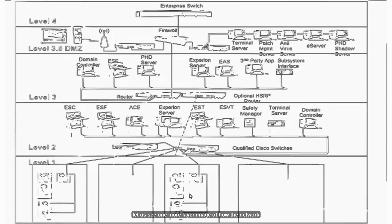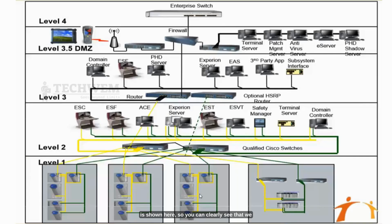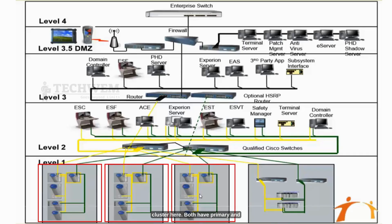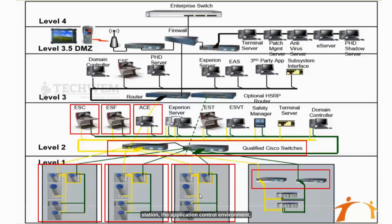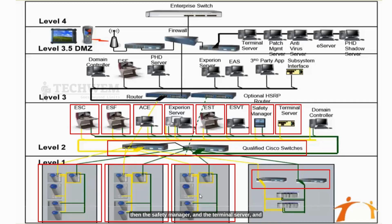Now let us see one more layer image of the network. You can see the main controller cluster, another controller cluster, and another controller cluster, each with primary and secondary cables ending at primary and secondary switches. There is another switch which combines your different PLCs, and those end at the qualified Cisco FTE Level 2 switches. All the stations — console station, flex station, Application Control Environment, Experion servers, extension station, control station, extended server, safety manager, terminal server, and domain controller — are all connected to your Level 2 switches.